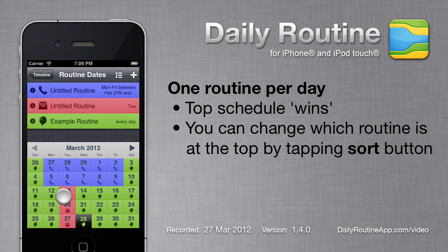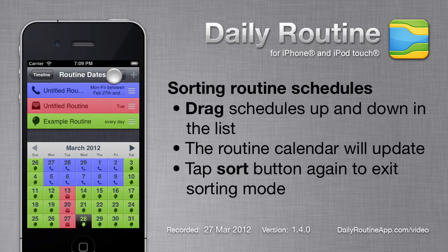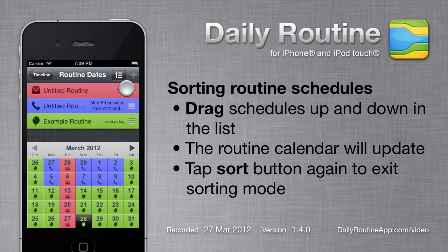We can change which routine is topmost by tapping the Sort button. The schedules shift over a little, and then we can change the order of routines until the calendar looks right. Then we tap the Sort button again to return to scheduling mode.